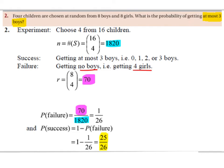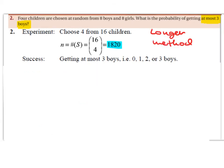In the next slide, I'm going to show you the exact same question, but we're not going to use the success or failure method. We're just going to work out the probability of getting zero boys, or one boy, or two boys, or three boys. As you can probably imagine, it's going to be much longer. It starts off the same — we're choosing four from 16 children — so n equals 16 choose 4, which is 1820.